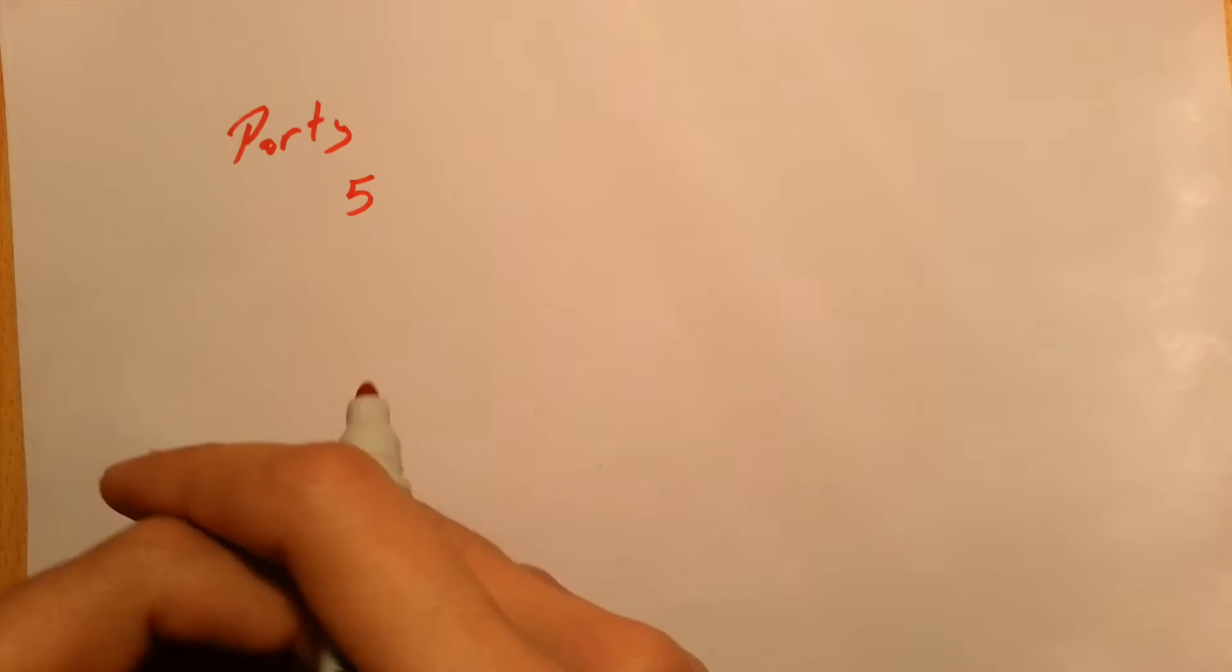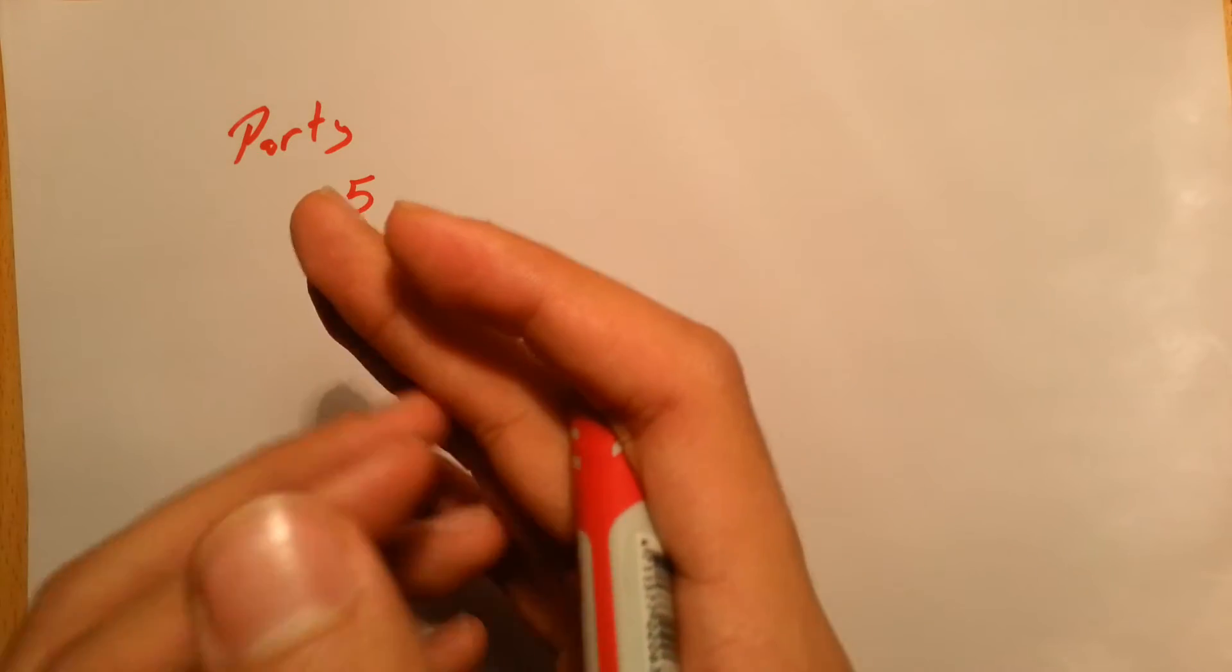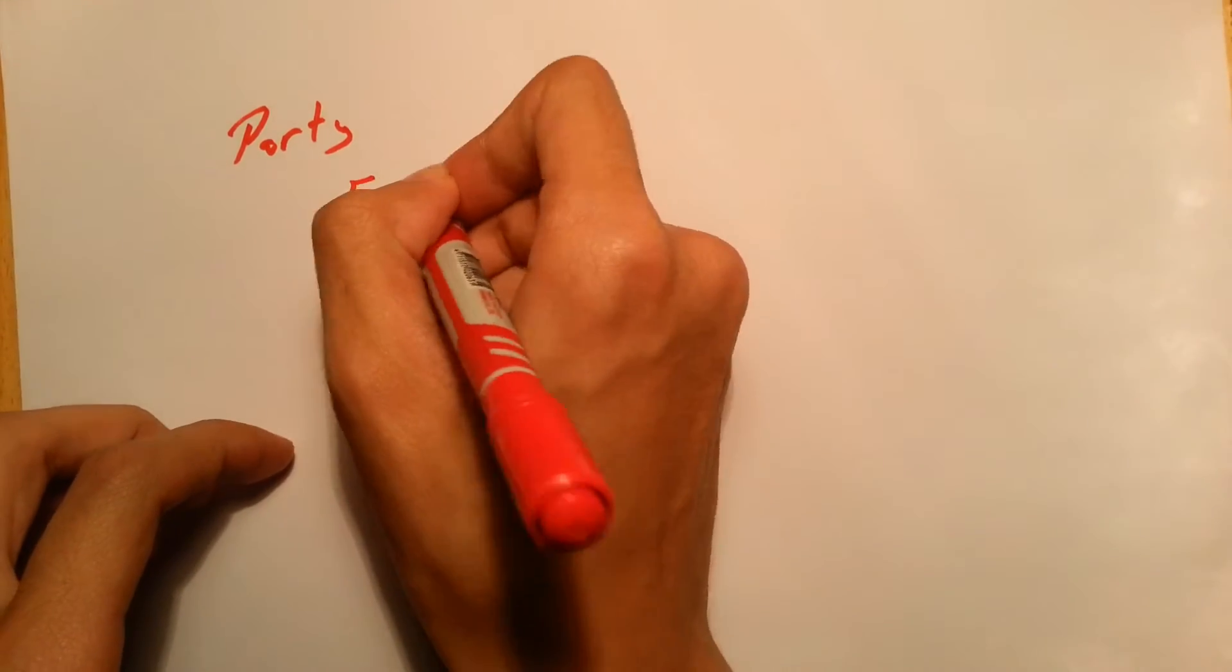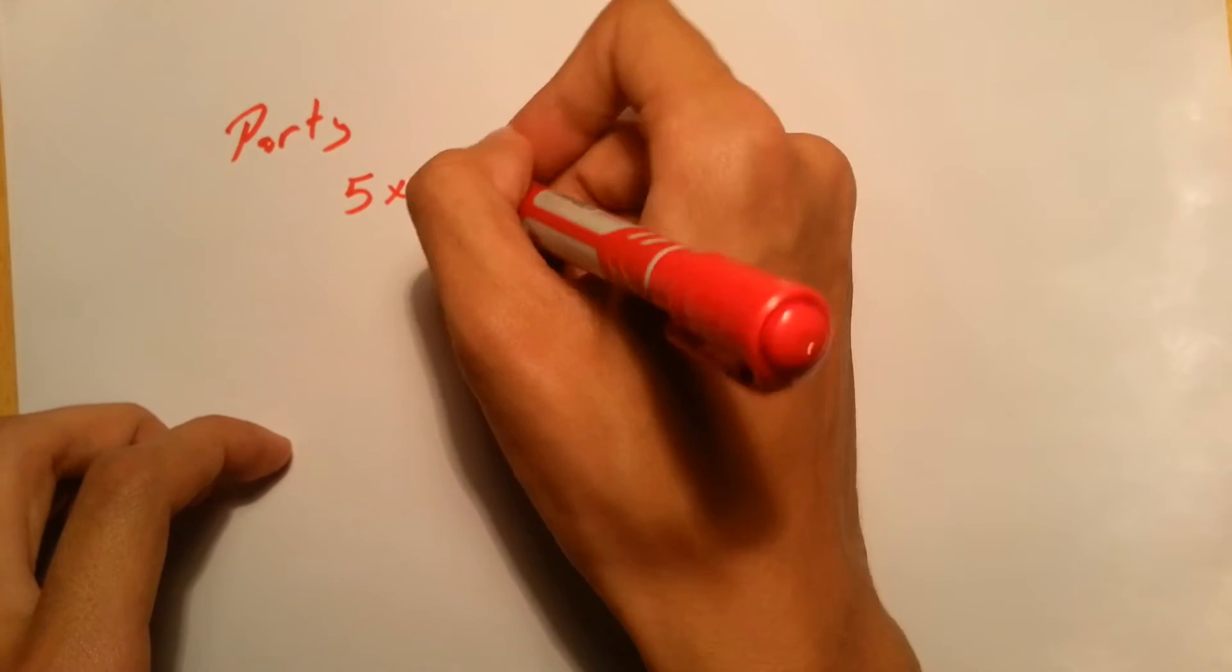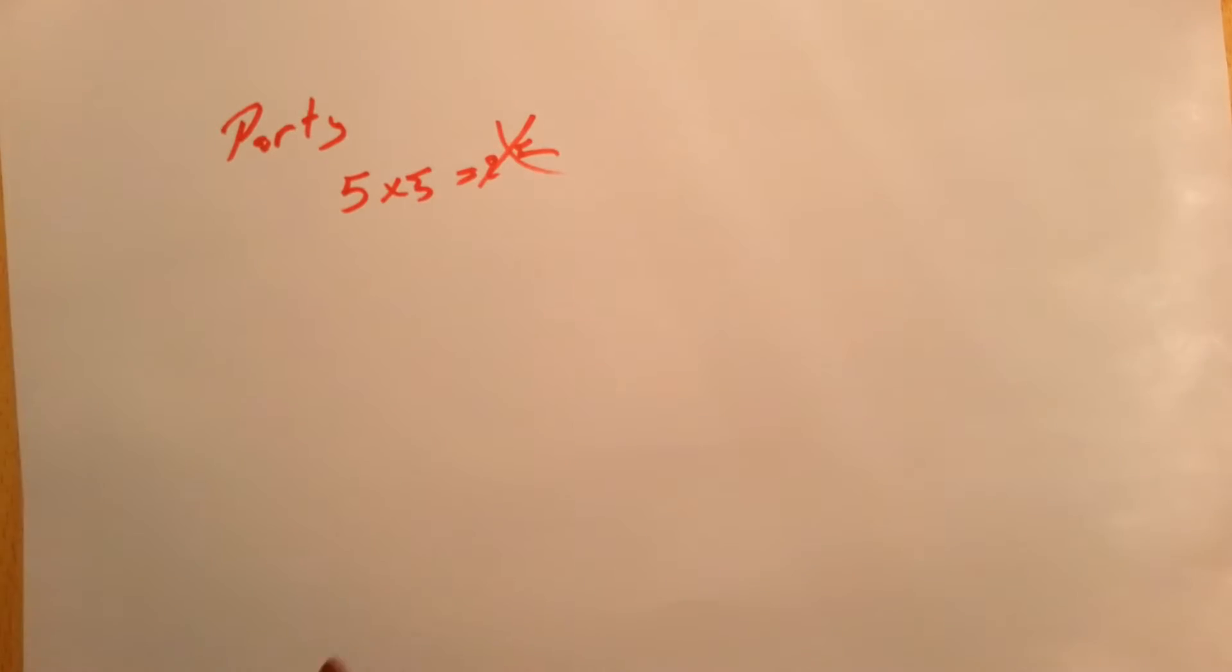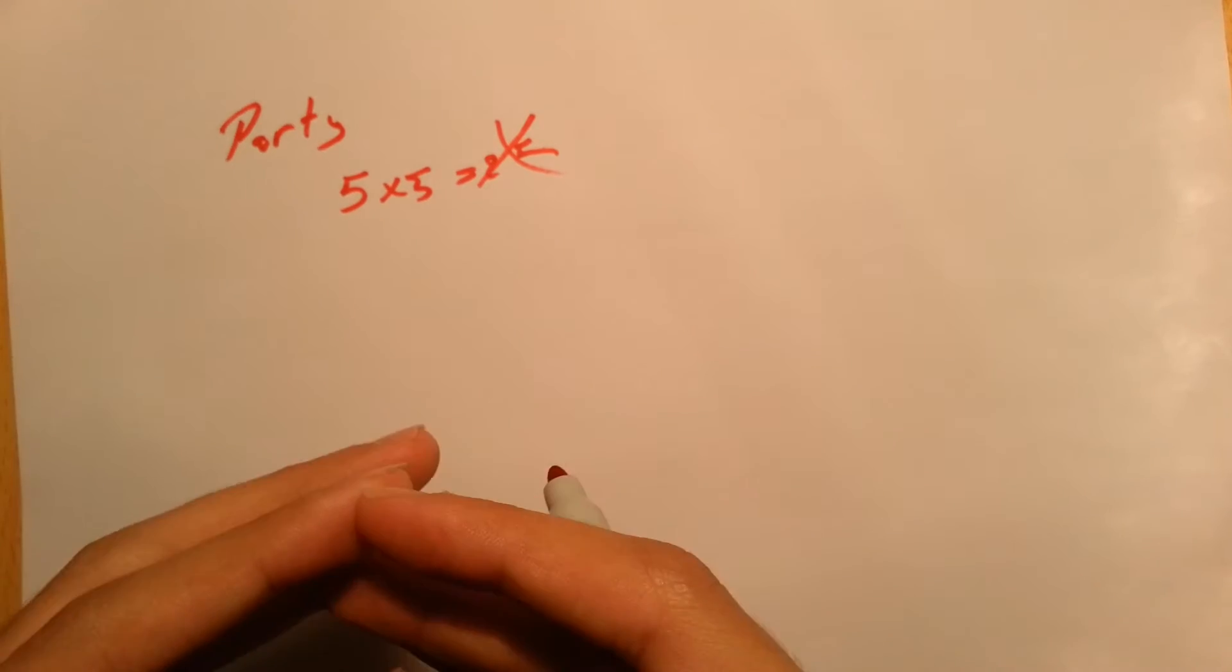So most people would say okay five people then everyone will have five handshakes, then five times five equals twenty-five which is wrong. So let me show you how to do this.